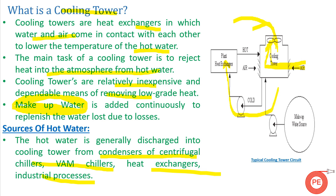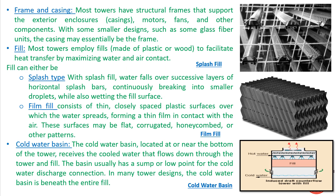The first thing that comes across while discussing a cooling tower is your frame and casing. You would have seen superstructures in cooling towers — these may be of RCC, and nowadays metal-based closed circuit cooling towers (CCCT) are also coming. The frame and casing are two important things: the casing is the external structure; frames support the exterior enclosures like motors, fans, and other components. With smaller designs such as glass fiber units, the casing may essentially be the frame.